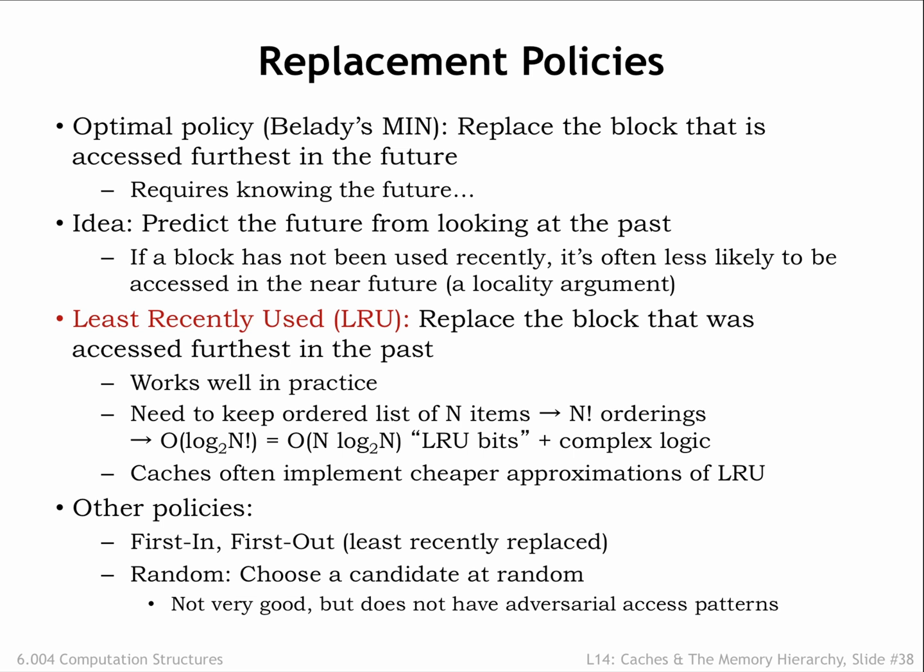There are other possible replacement policies: first in first out, where the oldest cache line is replaced regardless of when it was last accessed, and random, where a pseudo-random number generator is used to select the replacement. All replacement strategies except for random can be defeated — if you know a cache's replacement strategy, you can design a program that will have an abysmal hit rate by accessing addresses you know the cache just replaced. Most replacement strategies will occasionally cause a particular program to execute much more slowly than expected. When all is said and done, an LRU replacement strategy or a close approximation is a reasonable choice.